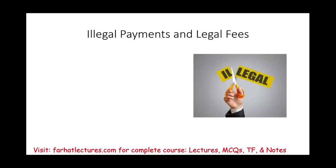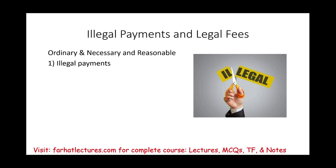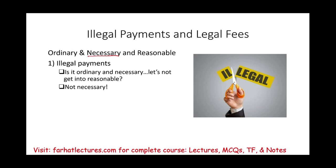Starting with illegal payments: when discussing business deductions, they must be ordinary, necessary, and reasonable. Illegal payments — such as bribes and kickbacks — are not ordinary in the US, nor are they necessary. Therefore, any illegal payment, such as bribing a cop, a judge, or another business owner, is not deductible. Illegal payments are simply not deductible.